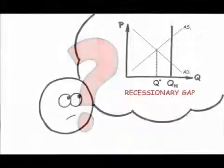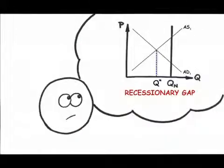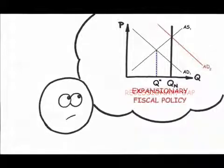Well, if there's a recessionary gap where the equilibrium GDP is lower than our potential, which also means that unemployment is higher than the natural rate, expansionary policy would be the appropriate response. As aggregate demand increases, the economy moves to full employment and potential GDP.